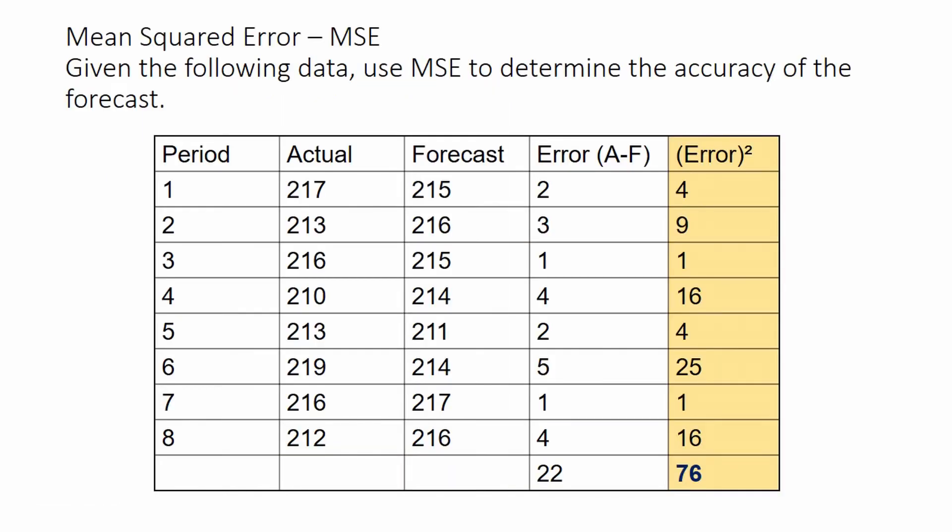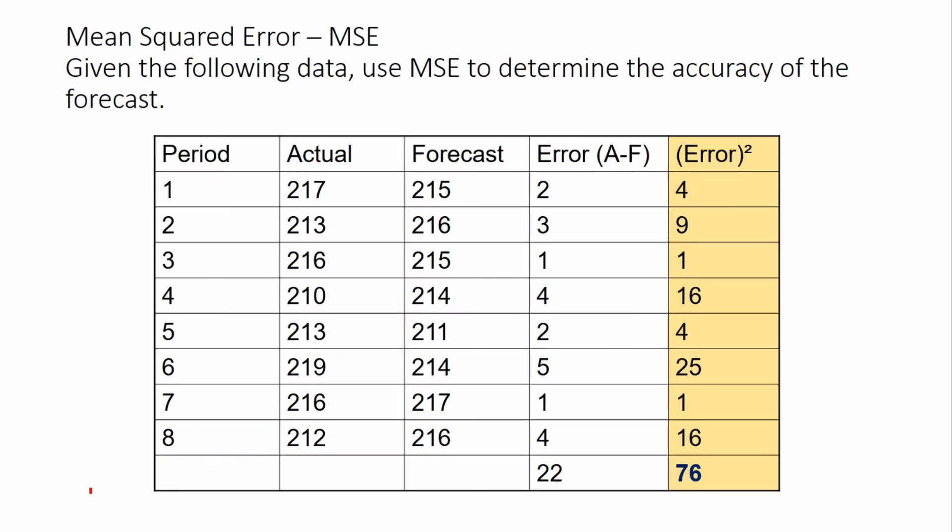Given the same data table, to get data under the error squared column, we square the data under the error column. So 2 squared is 4, 3 squared is 9, 1 squared is 1, and so on. The summation of the errors is 76, which will be divided by 7, which is the number of available data, 8, less 1.